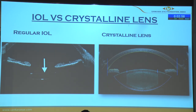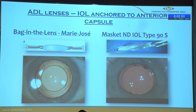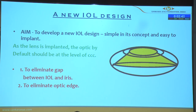To get rid of negative dysphotopsia, we have to eliminate this space and we have to eliminate the optic edge. Based on this concept, other lenses are available but they are very complicated to implant and have their own issues of availability and implant cost. Our idea was to develop a new IOL design — simple in concept and easy to implant — where the optic by default comes to the capsulorrhexis margin, eliminating the gap between the iris and the optic, with no optic edge.